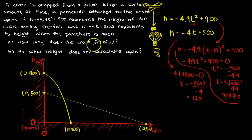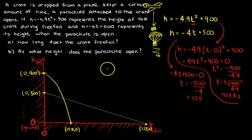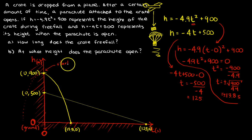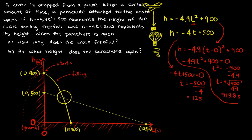Now that you've drawn the graph, how long does the crate free fall? By 'how long' I mean how much time does it take? The question you want to ask yourself is: when does the parachute open? The crate gets dropped from here, starts here, and it's falling along the curve — and then the parachute opens.